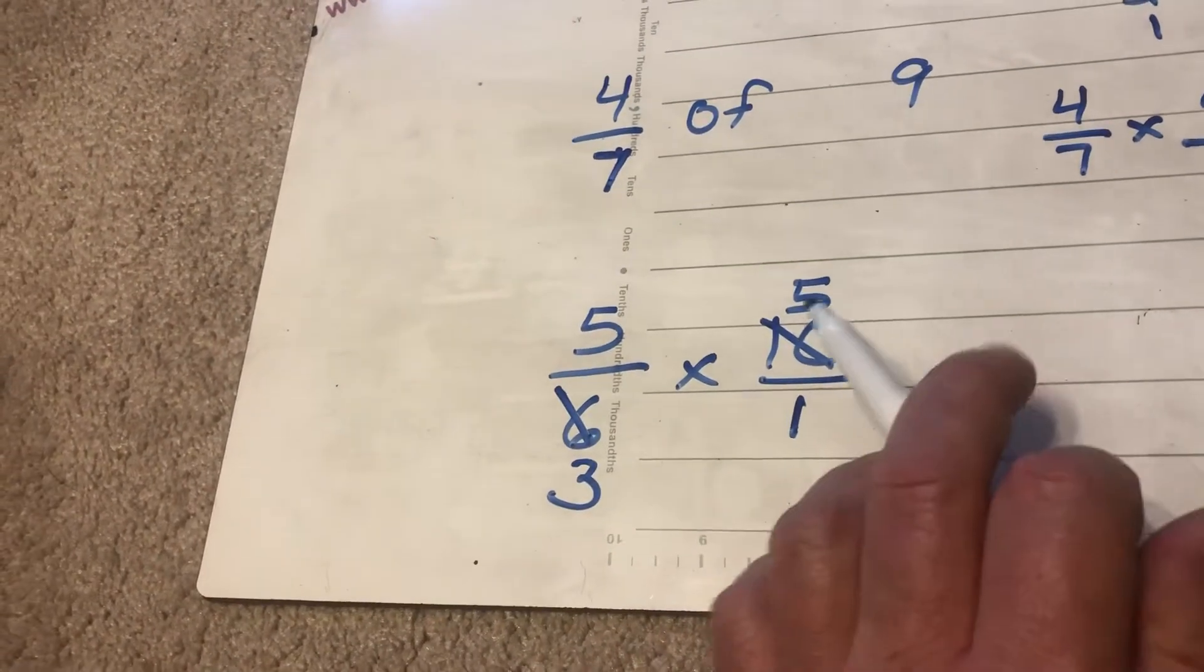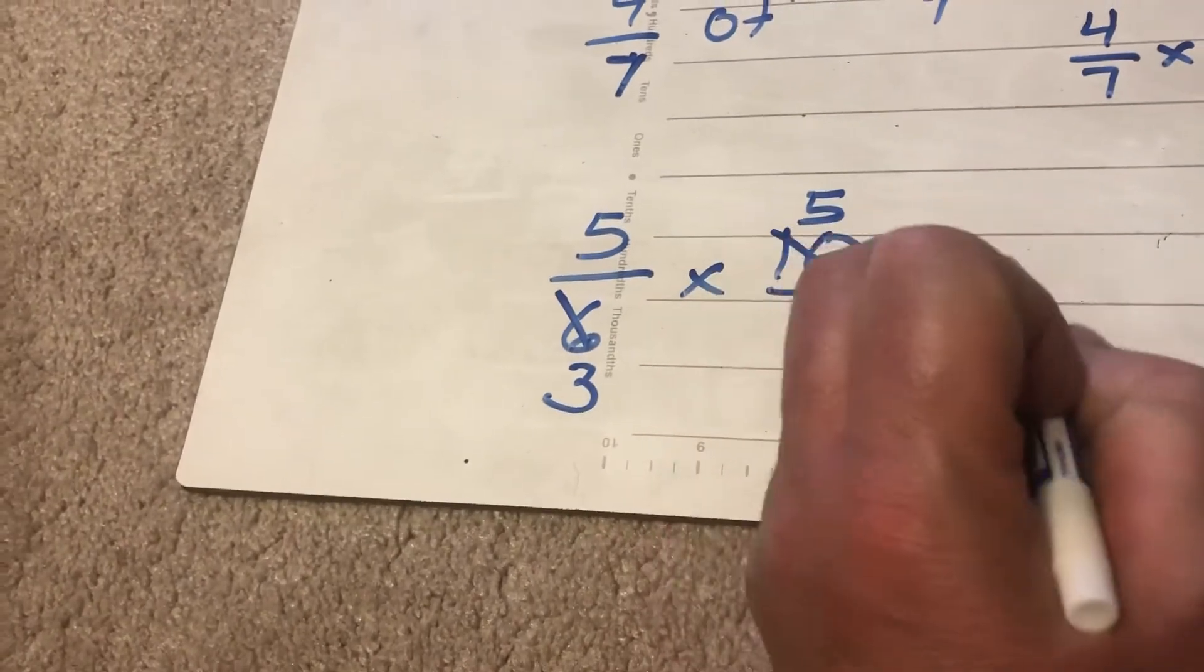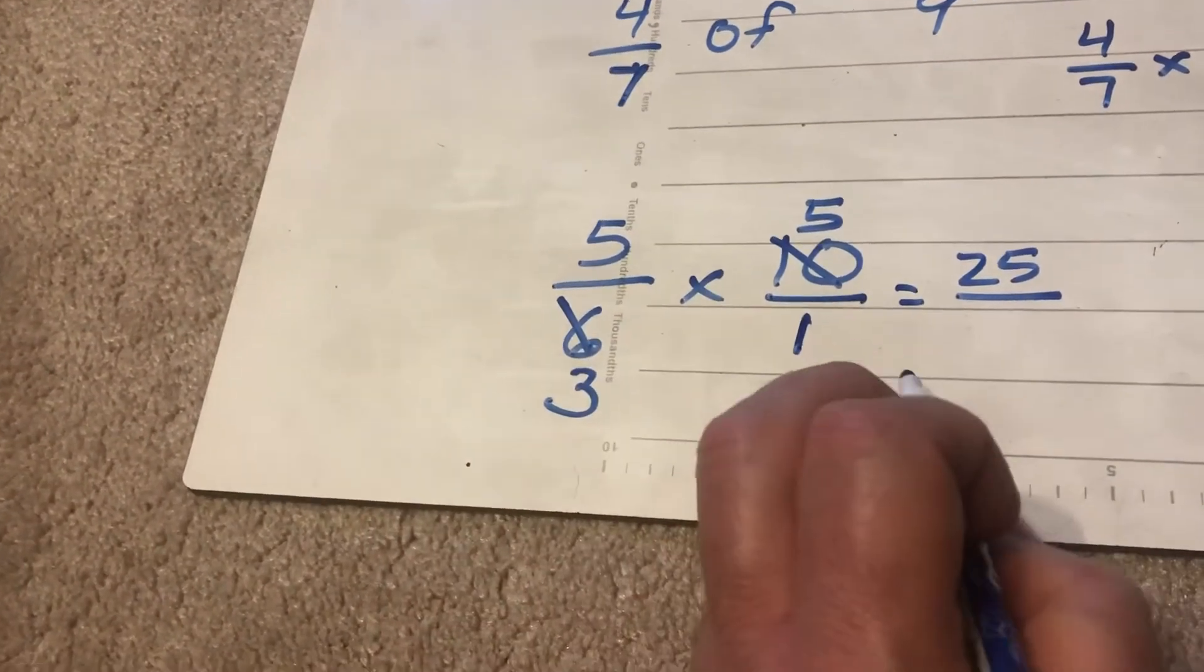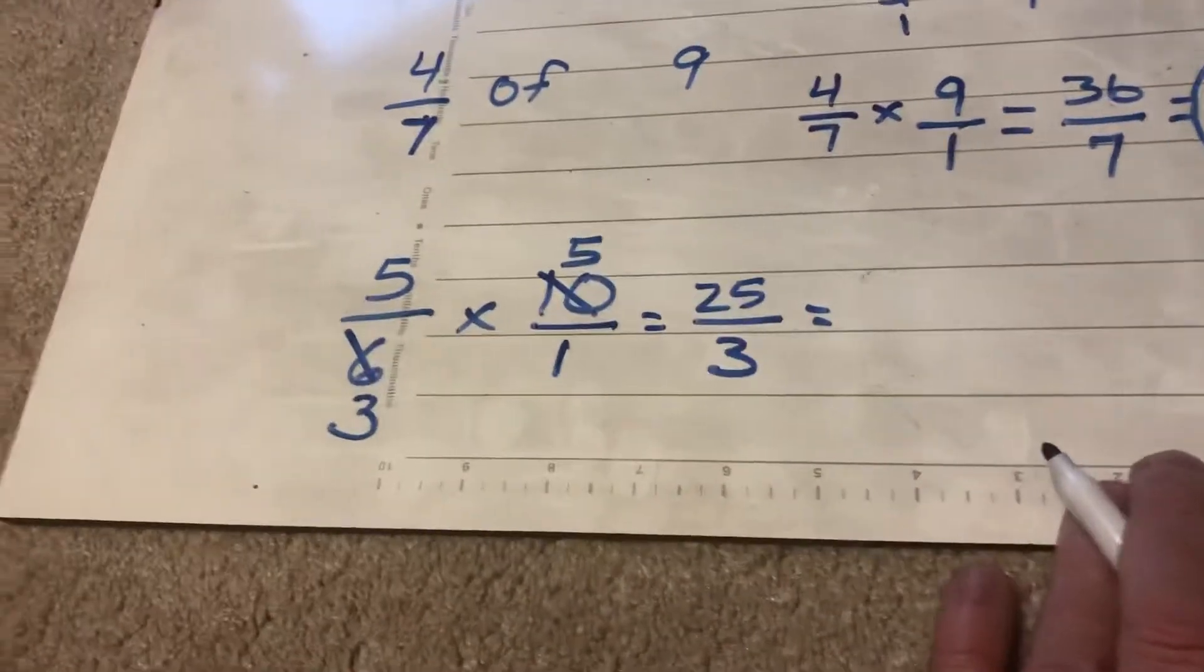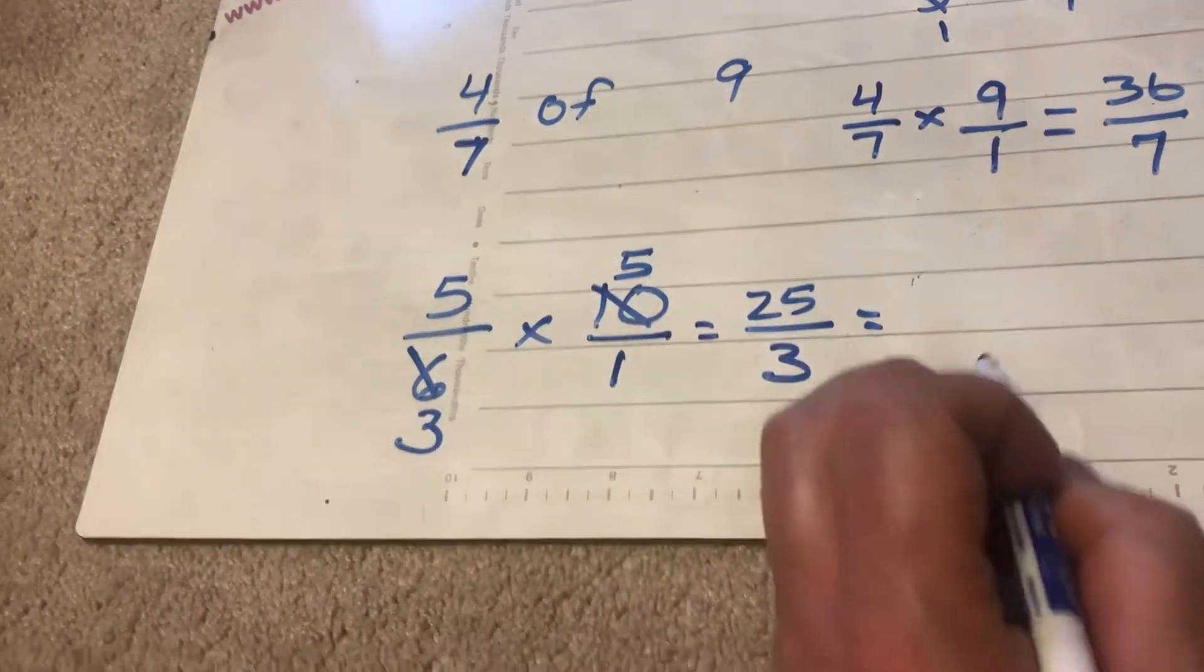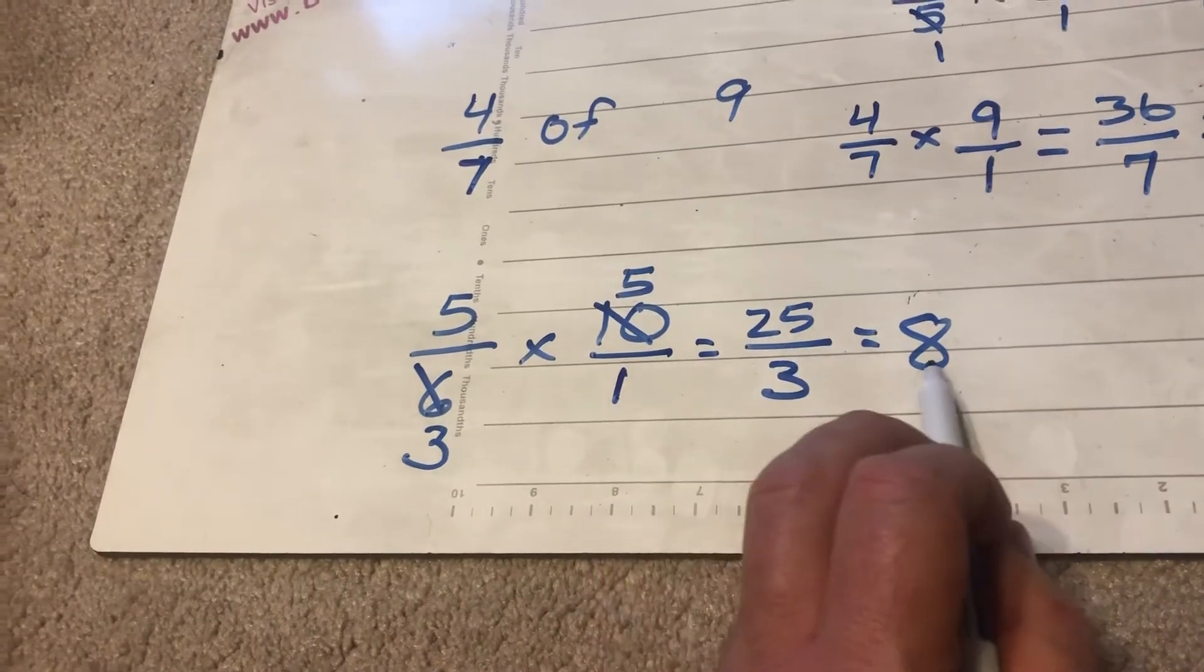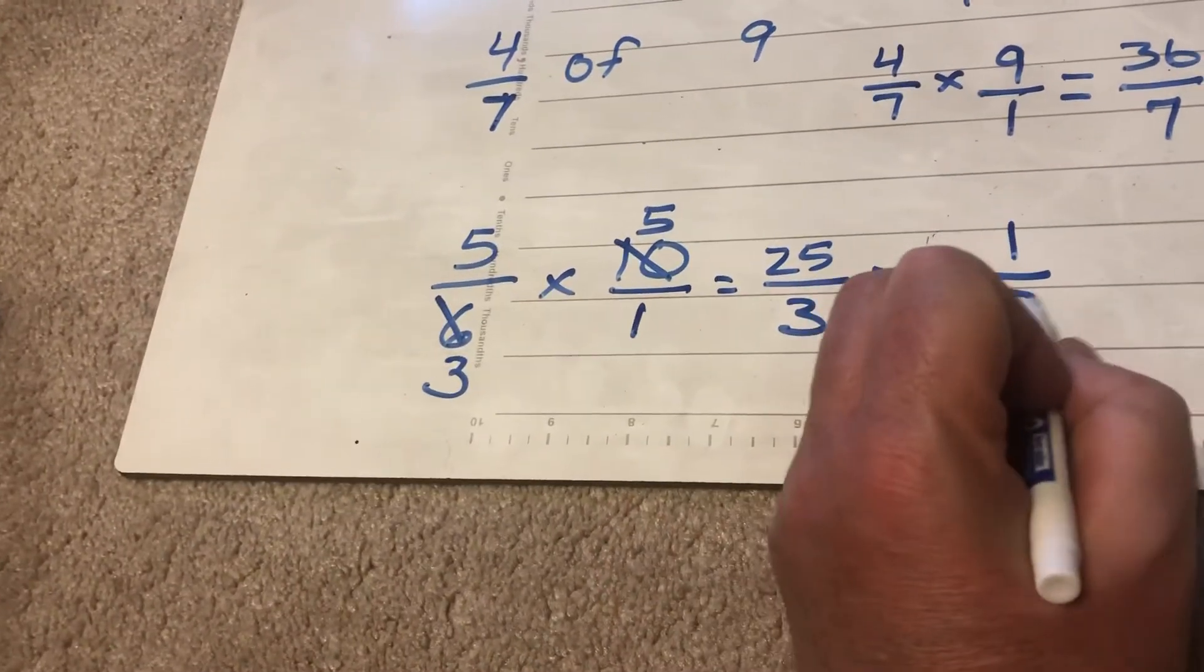Nothing besides 1 can go into both 3 and 5 evenly so I'm all set there. 5 times 5 is 25. 3 times 1 is 3. I end up with 25 over 3. Alright, well 3 can go into 25 eight times. If I take 3 into 25 eight times I'll have 1 left over. My denominator there is 3.